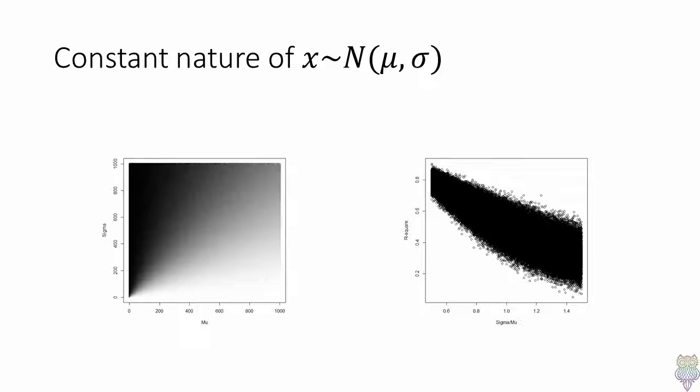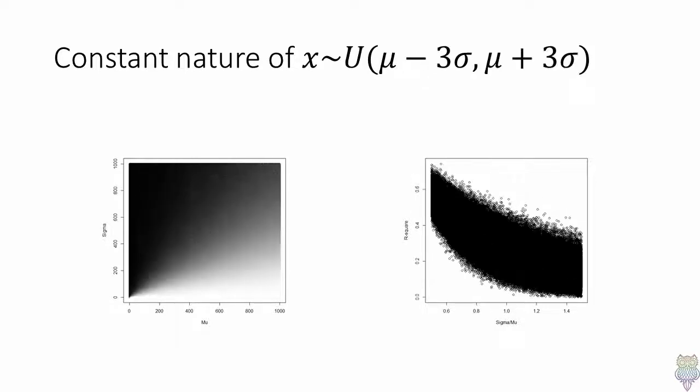If you consider normal distributions and the coefficient of variation, the larger the coefficient of variation, the less constant the variable is. That is, the bigger the standard deviation compared to the mean, the more the data is considered to vary. If you consider uniform probability distributions, it has a similar behavior.